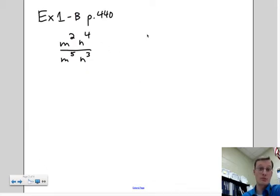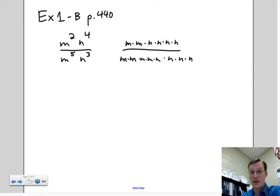All right, so in example 1B on page 440, we have an example where we have these like bases that are vertical. What we're going to do, there's two different versions. One, you can just write it out. So we have two M's in the numerator and five M's in the denominator, four N's in the numerator, three N's in the denominator.